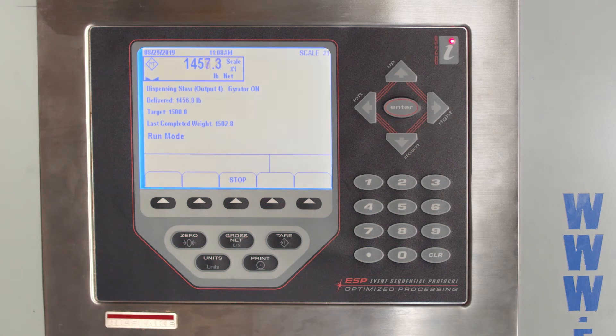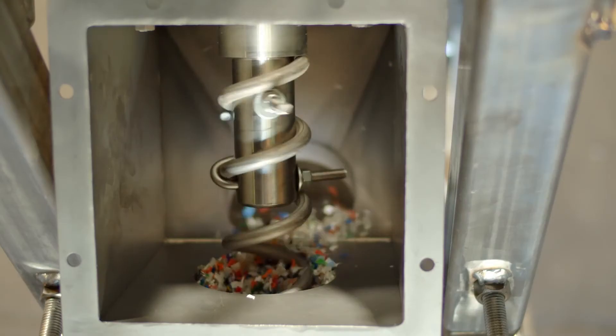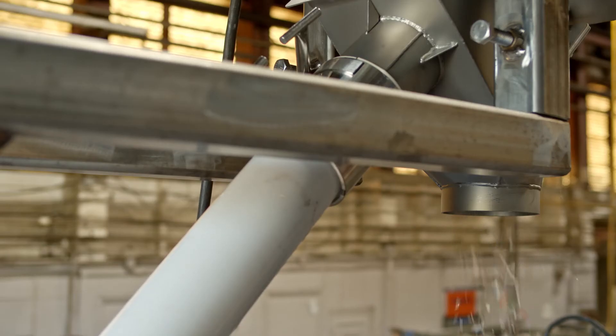the system will partially close the valve to dribble or slow the conveyor. The controller will close the valve or stop the conveyor just prior to the target weight to account for in-flight material.